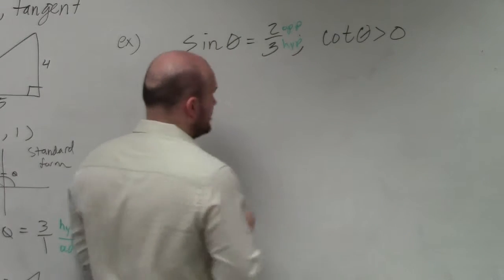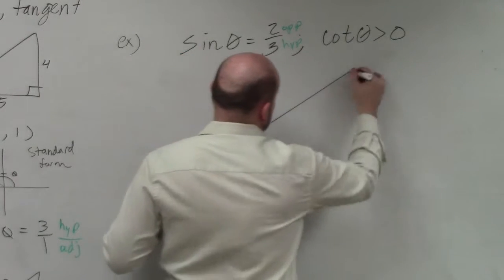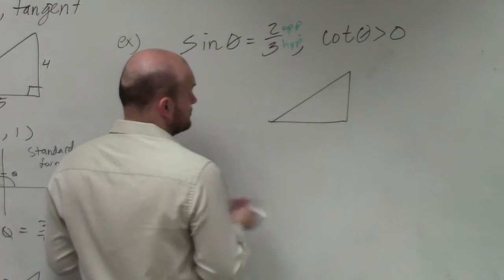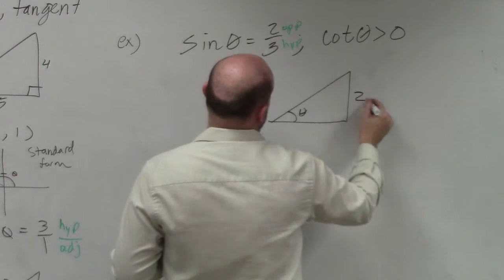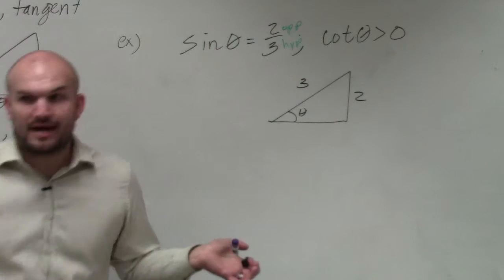Now, you guys are so familiar with always drawing triangles like this. And that's fine. If you have, here's theta, right? And this is your opposite side, 2 over 3. Because everybody's cool with that, right?